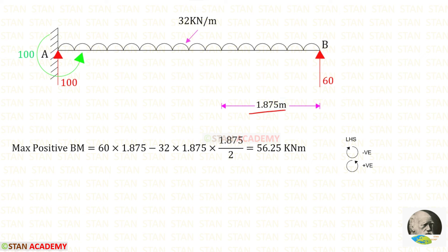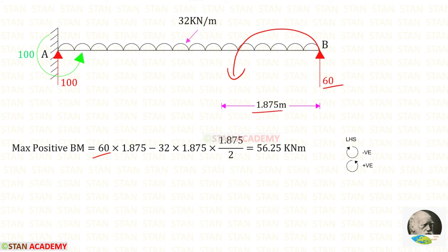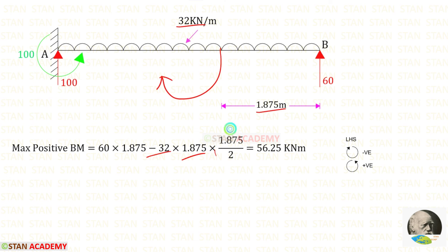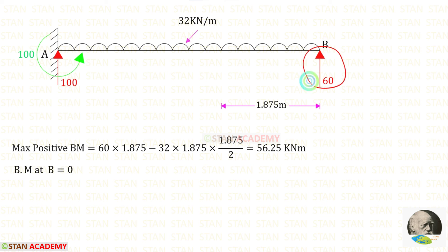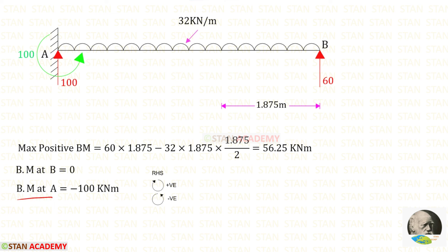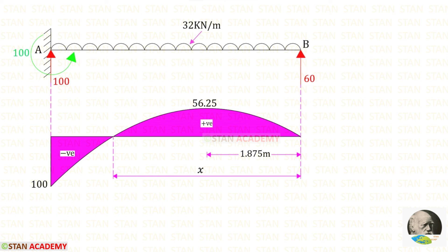At x = 1.875 m from B we have the maximum positive bending moment. Using the left-hand side rule (clockwise negative, anticlockwise positive): RB acts anticlockwise — positive — with distance 1.875; UDL acts clockwise — negative — multiplied with distance and distance by 2. Finally the maximum positive bending moment = 56.25 kNm. Point B is a simply supported end, so the bending moment at B is 0. To find the bending moment at A, using the right-hand side rule (clockwise positive, anticlockwise negative), MA acts anticlockwise so it is negative. The bending moment diagram is drawn, and there is a point where the bending moment becomes 0, called the point of contraflexure.